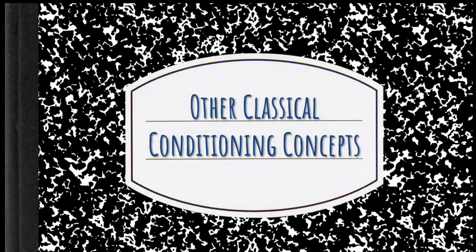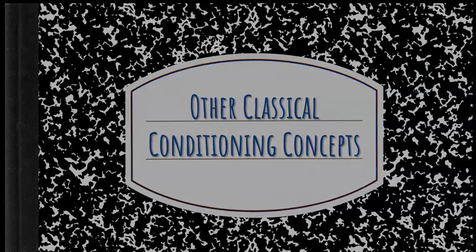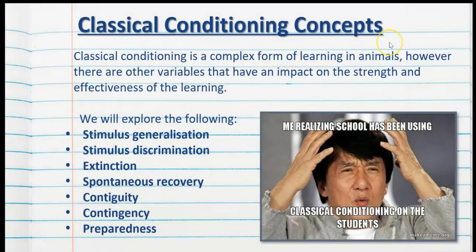Often the unconditioned response and the conditioned response are the same or very similar — what changes is what causes them. That's the process of classical conditioning. There are other variables that impact the strength and effectiveness of learning: stimulus generalisation, stimulus discrimination, extinction, spontaneous recovery, contiguity, contingency, and preparedness. It's important that we know all of these terms as they have the potential to impact the strength and effectiveness of classical conditioning.